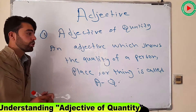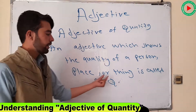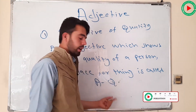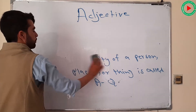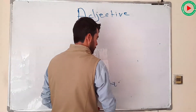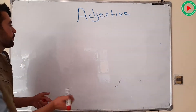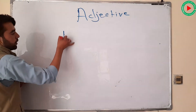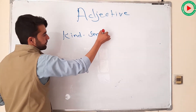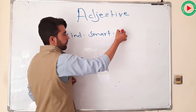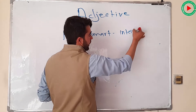What is the quality of the person? What is the adjective of quality? For example — kind, smart, intelligent. These words describe the quality of a person.